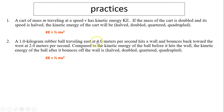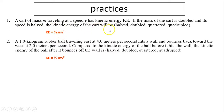Let's look at more examples. A car of mass m traveling at speed v has kinetic energy KE. If the mass is doubled, KE will double, because that's a direct relationship. Then if the speed is halved, KE will be quartered. So first you double KE, then quarter it: 2 × ¼ = ½. The kinetic energy will become halved.